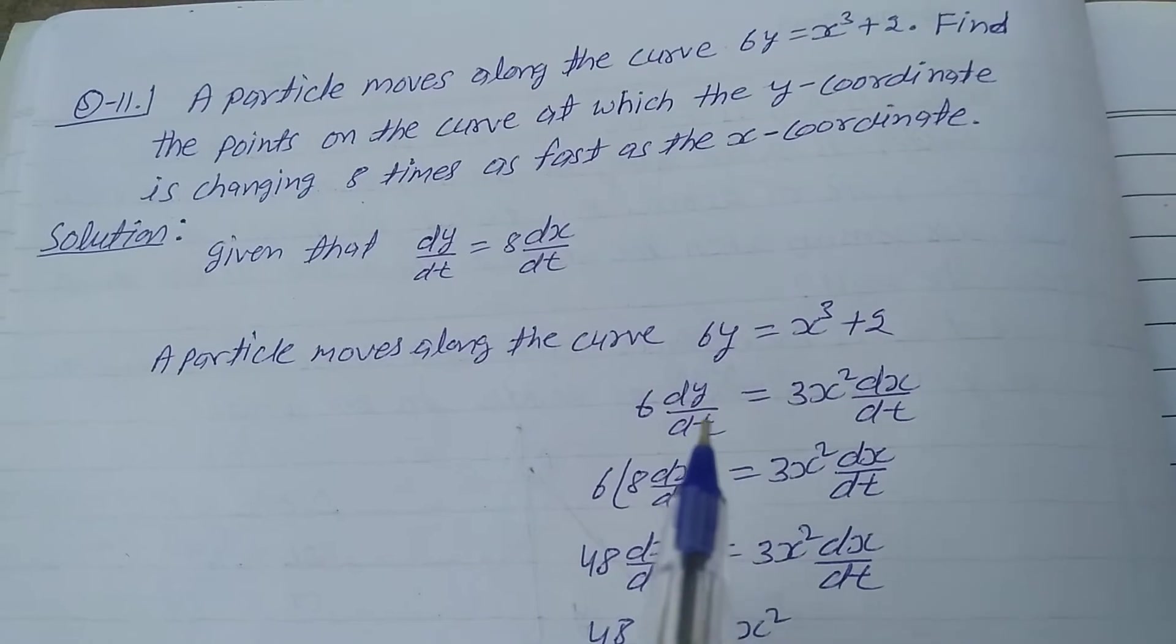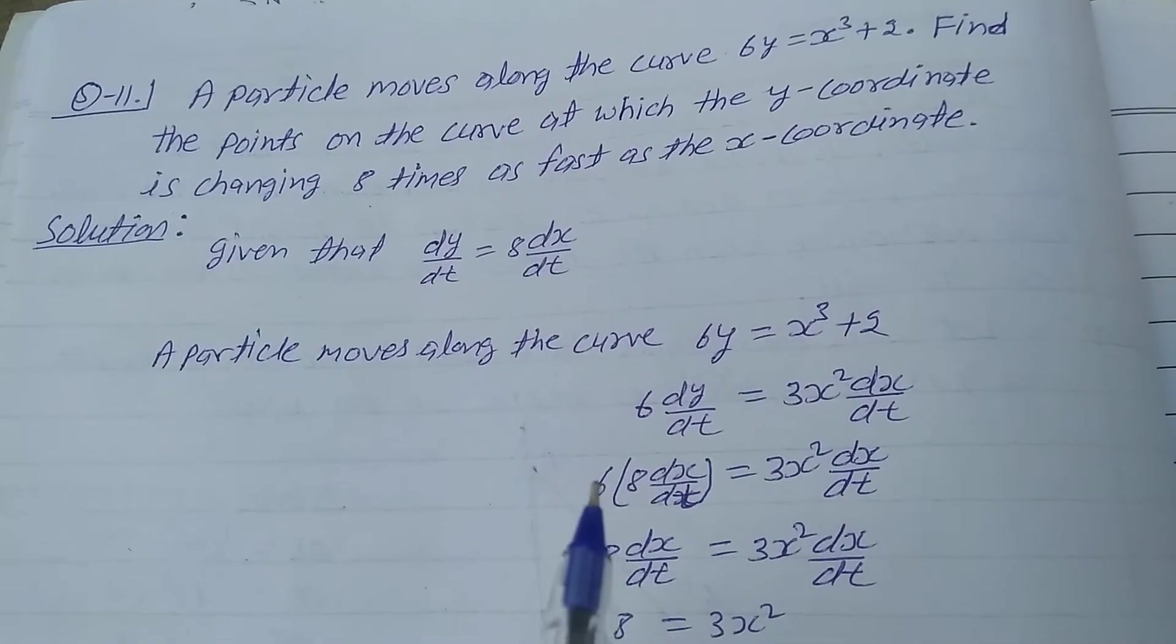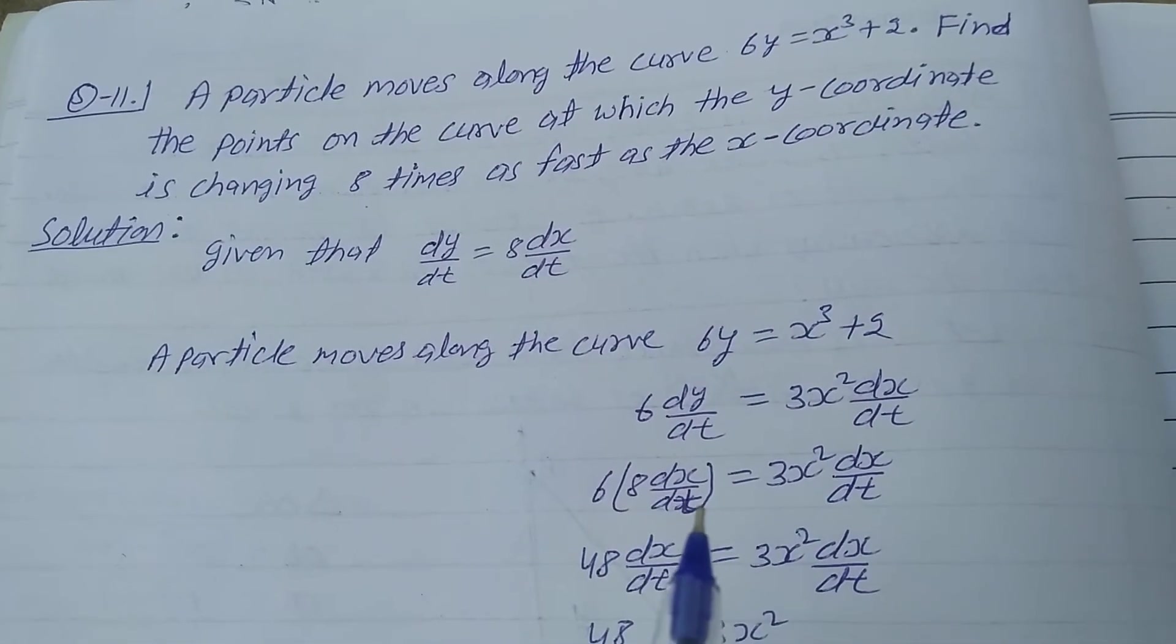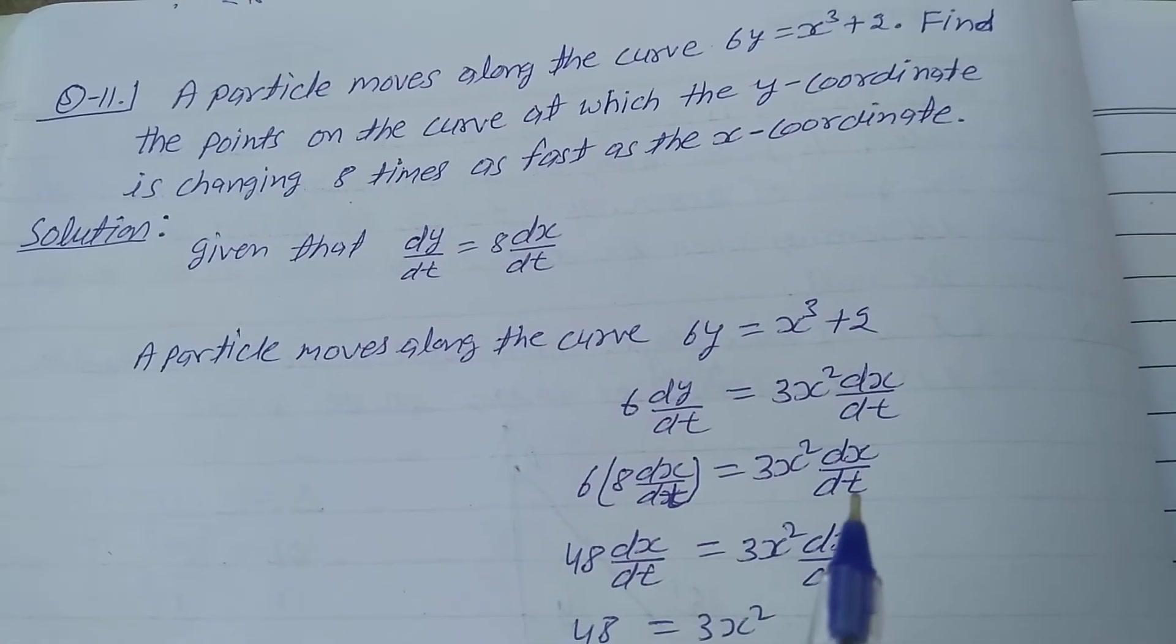So dy/dt value is put here, so 6 bracket of 8 dx/dt is equal to 3x² dx/dt.